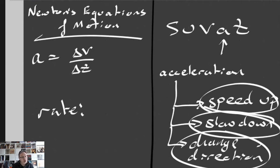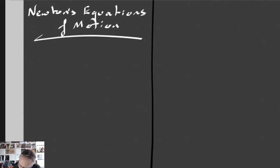If you're never quite sure, just ask yourself mentally: is this object getting faster, getting slower, or changing direction? You can actually do two of those things at once — you could speed up and change direction at the same time, or slow down and change direction at the same time. Now let's get back to Newton's equations of motion.